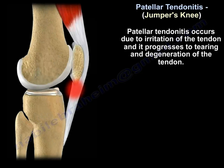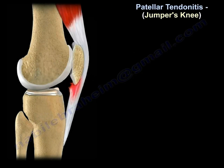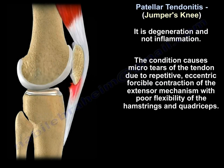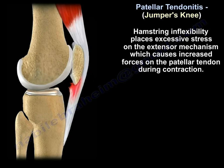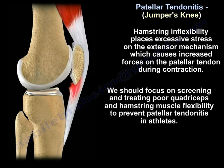Patellar tendonitis occurs due to irritation of the tendon, progressing to tearing and degeneration — it is a degeneration and not inflammation. The condition causes micro tears of the tendon due to repetitive eccentric forcible contraction of the extensor mechanism with poor flexibility of the hamstring and quadriceps. Hamstring inflexibility places excessive stress on the extensor mechanism, causing increased forces in the patellar tendon during contraction.